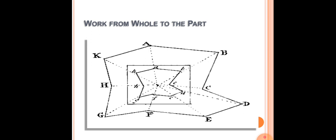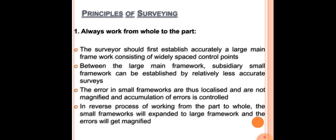...F, G, H, and K — these are actually widely spread control points which will be fixed first. From these points, we will start taking measurements inwards. The whole area is first considered, and from there we will start working towards the part. After this particular area, we will go to smaller areas.